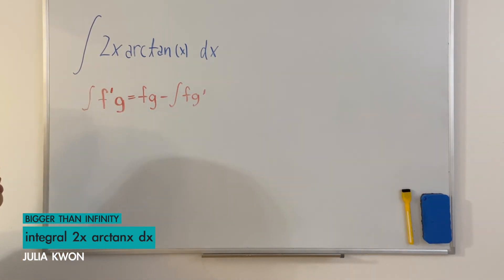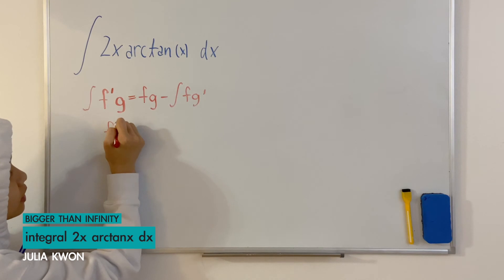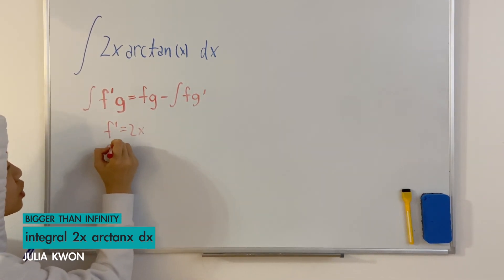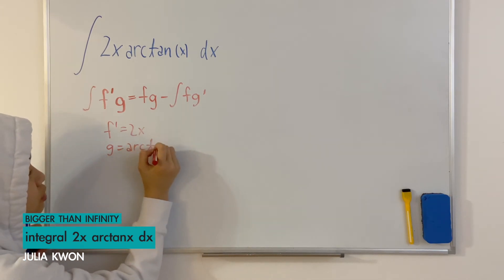We're going to set f prime equal to 2x and we're going to set g equal to arctangent x.